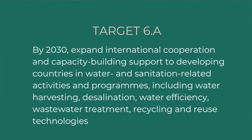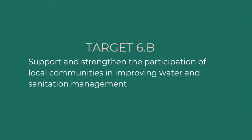SDG 6 also features two means of implementation targets, which cover capacity building and participation, particularly of local communities and developing countries. They point to the fact that it is essential to have local buy-in to ensure the needs of end users are met, and that the impact of development decisions is fully understood by communities to encourage long-term ownership. Target 6A: by 2030, expand international cooperation and capacity building support to developing countries in water and sanitation-related activities including water harvesting, desalination, water efficiency, wastewater treatment, recycling, and reuse technologies. Target 6B: support and strengthen the participation of local communities in improving water and sanitation management.